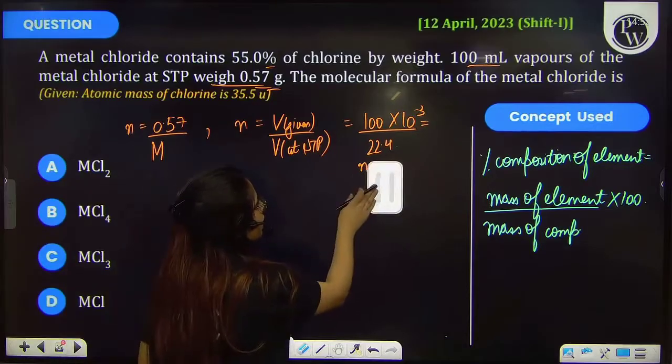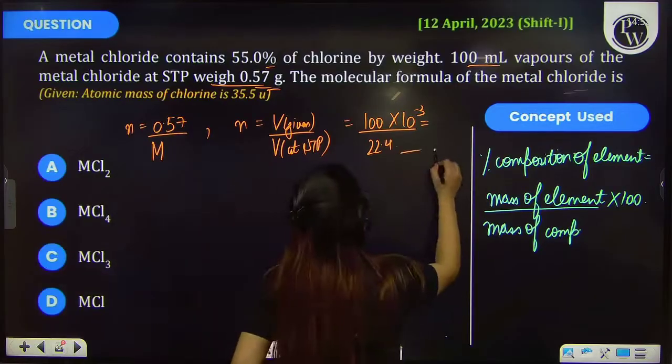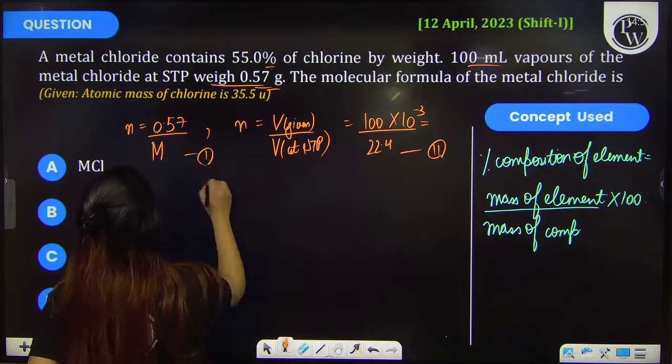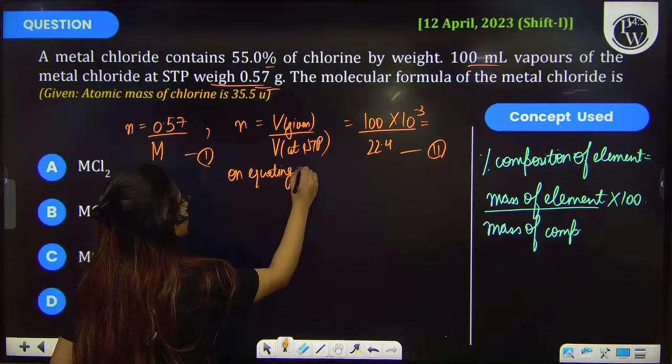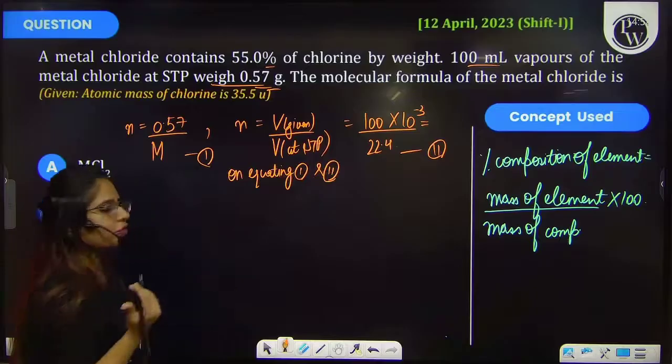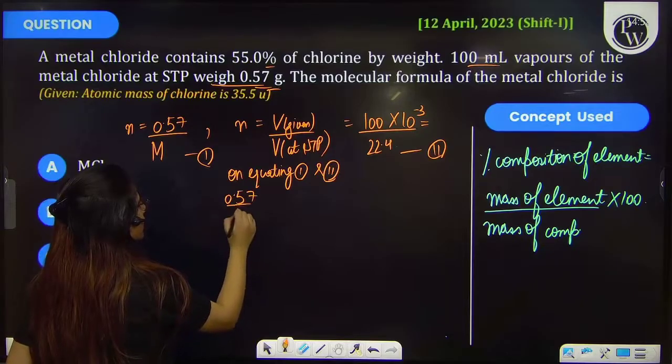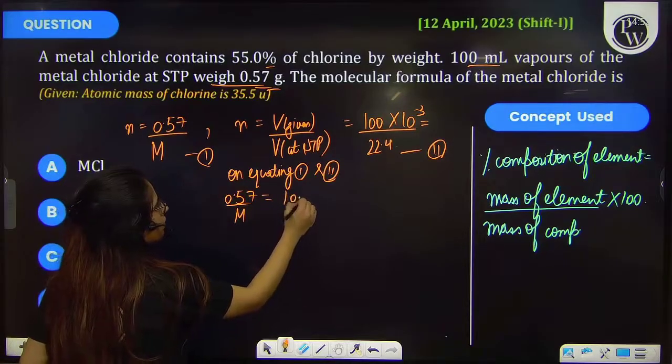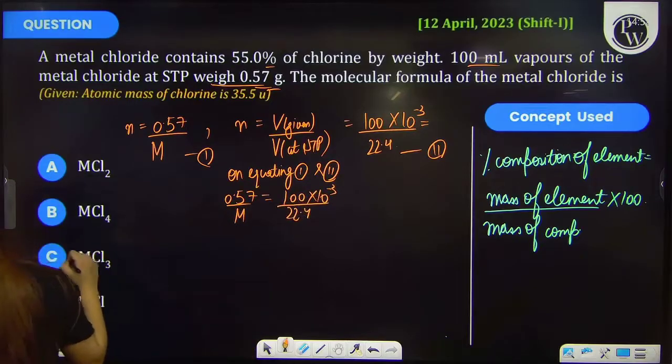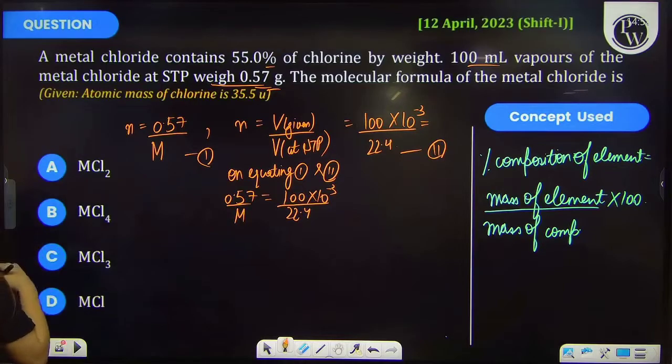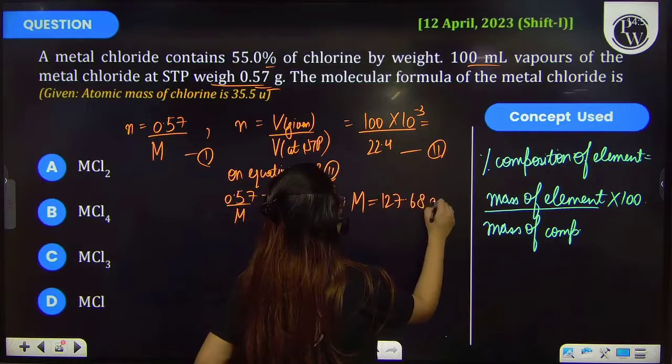Since we know that this is the number of moles, let's equate these two equations to calculate the value of M. By this you will get 0.57 by M equal to the calculated moles. Therefore on solving you will get value of M as 127.68 gram per mole.